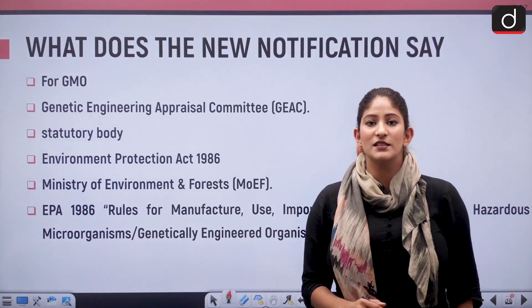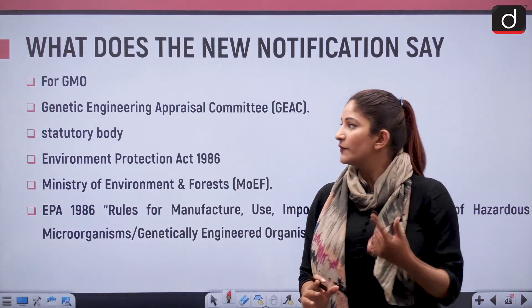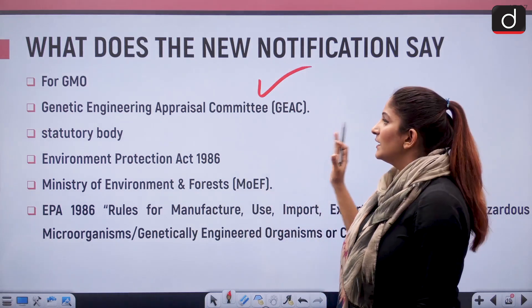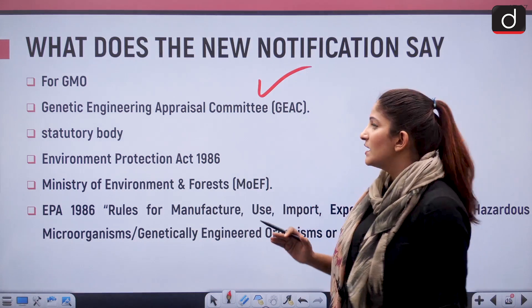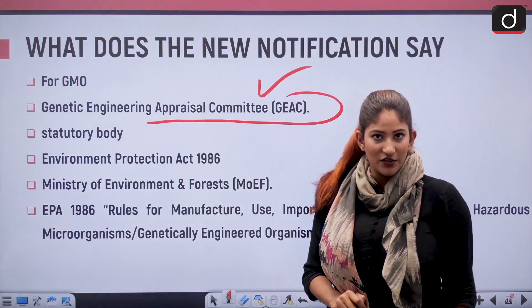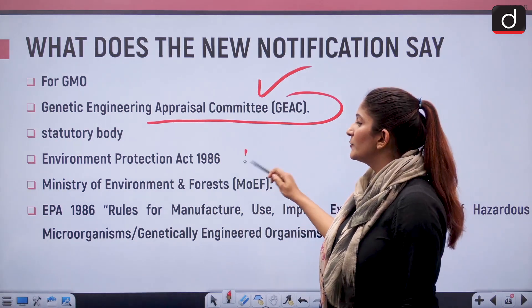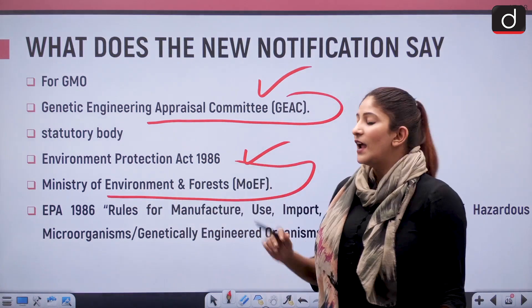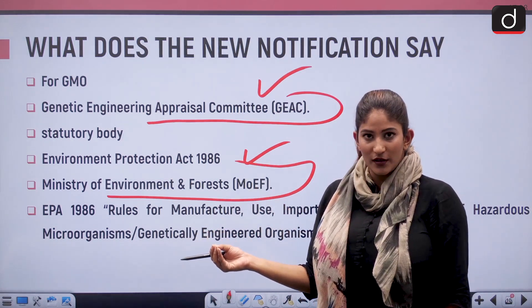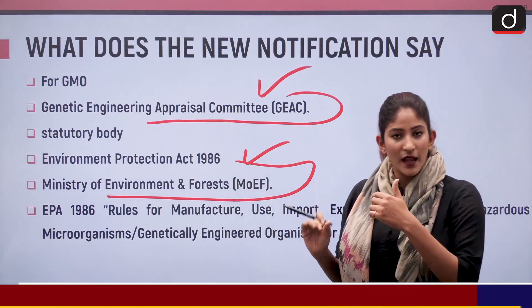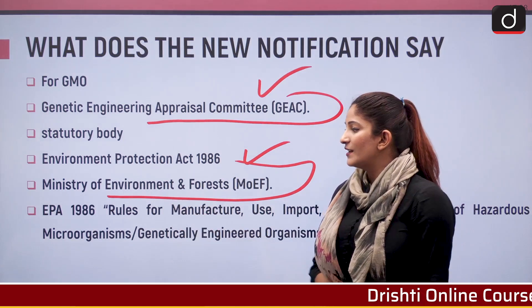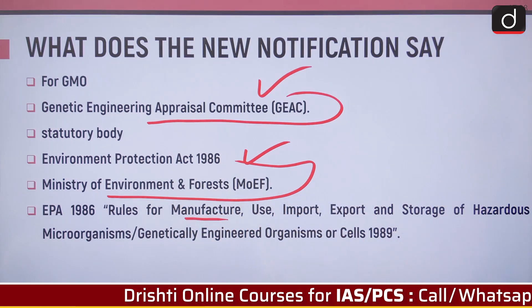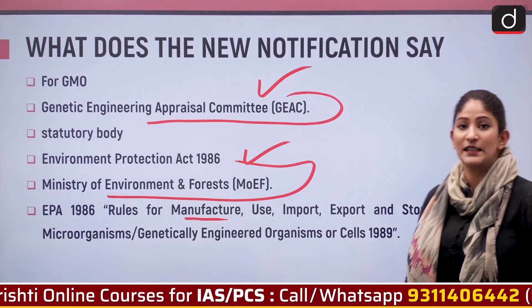Regarding the new notification: for genetically modified crops, it is a cumbersome process to introduce a crop into the market. The authority with powers for this is the Genetically Engineering Appraisal Committee (GEAC). It is a statutory body formed under the Environment Protection Act of 1986 — a very tricky prelims question — and it comes under the Ministry of Environment and Forests. The governing act is the EPA 1986 rules for manufacture, use, import, export, and storage of hazardous microorganisms, genetically engineered organisms or cells, 1989.